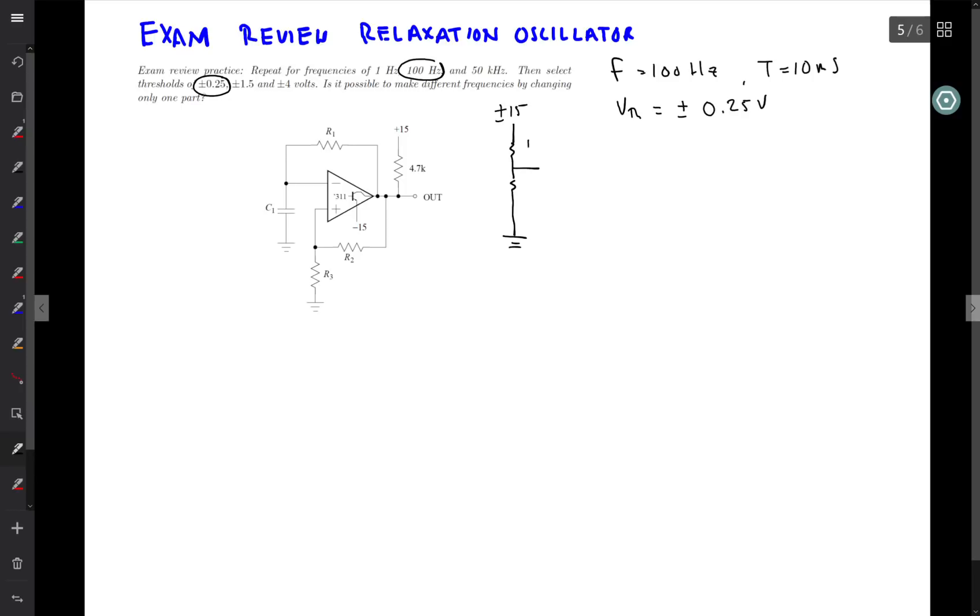So this is R2 and this is R1. We want, as an output, to be plus or minus 0.25 volts. And with plus or minus 15 on the input, that means I'm going to have 14.75 volts between this point and that point and 0.25 volts between that point and that point.